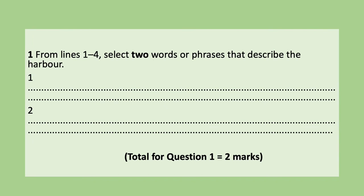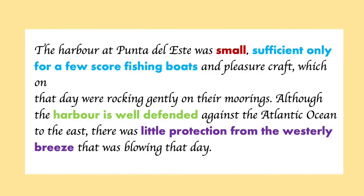Question number one: from lines 1 to 4, select two words or phrases that describe the harbor. You are supposed to select two words or phrases from the text and just copy them down. There are many possible answers and you have to choose two. For example: 'small, sufficient only for a few score fishing boats,' 'harbor is well defended,' or 'little protection from the westerly brace.' You can select any two.